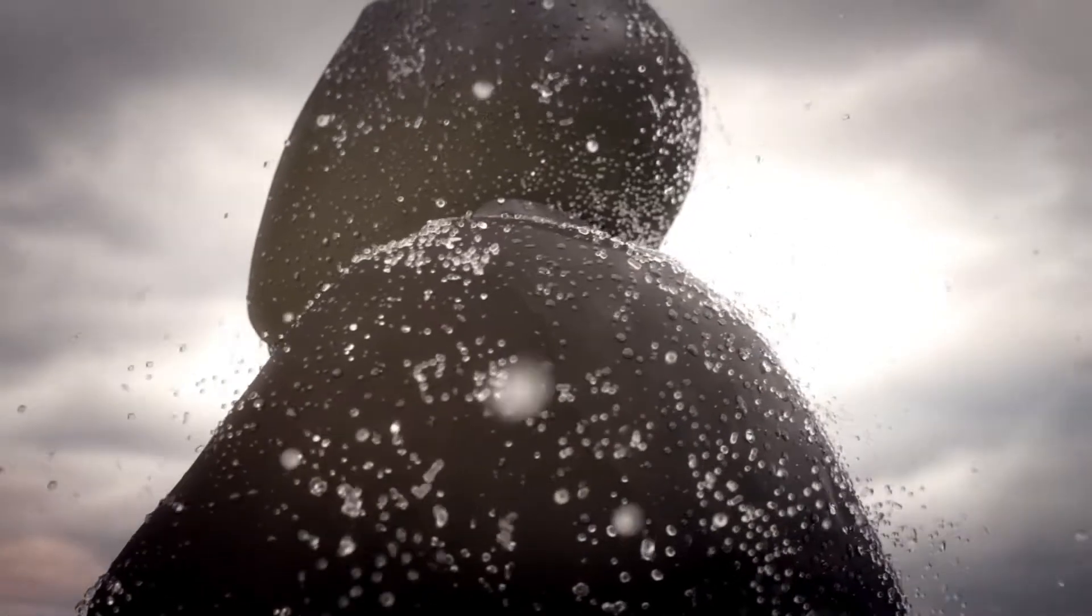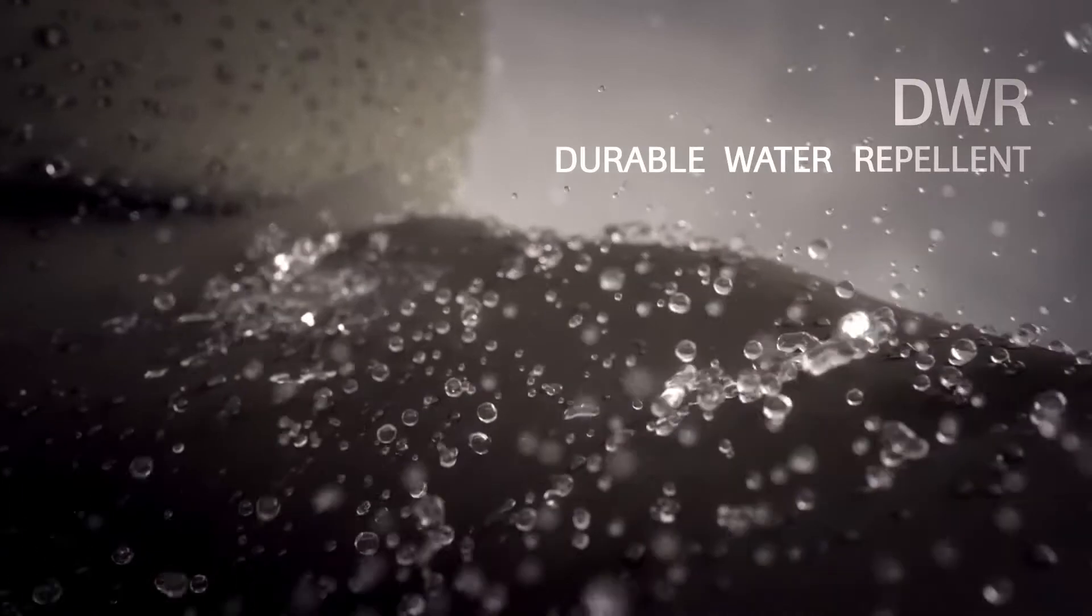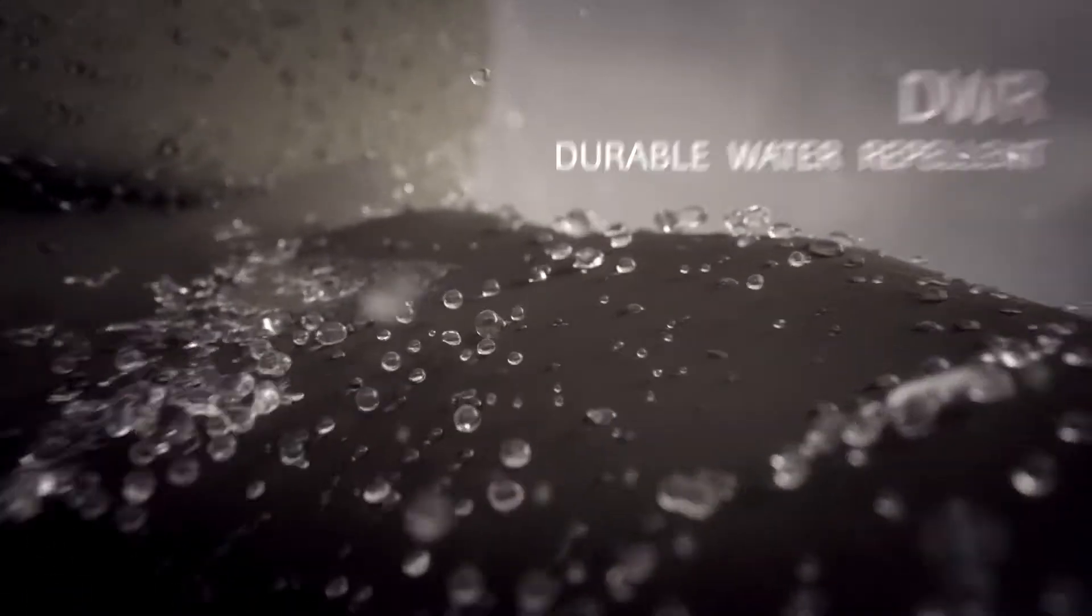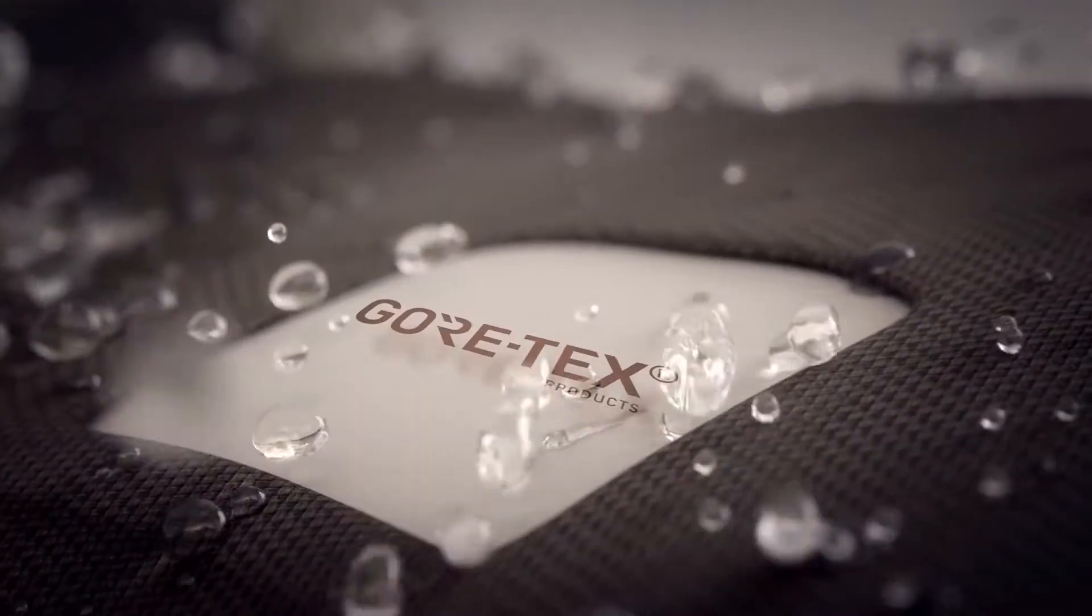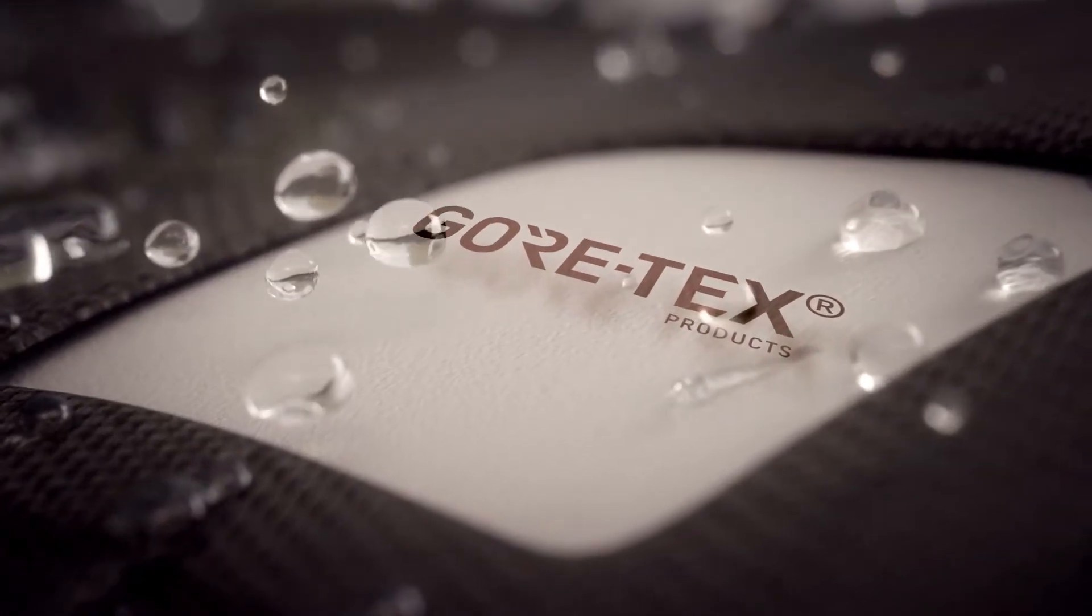The first layer of protection lies in a ruggedly constructed outer layer with a DWR durable water repellent finish. Beneath this outer layer lies the legendary Gore-Tex membrane that prevents water from penetrating.